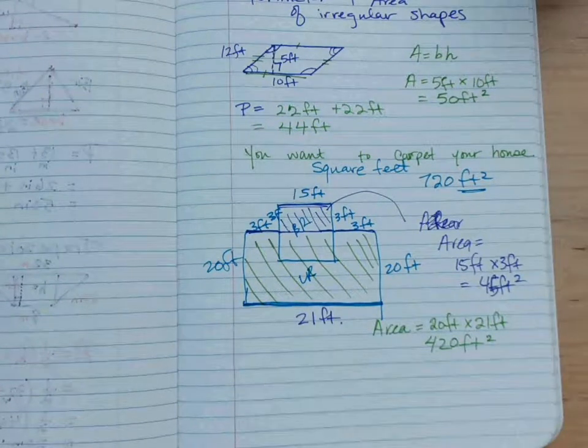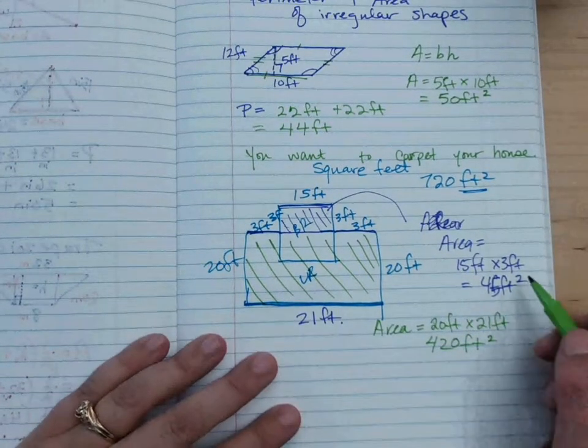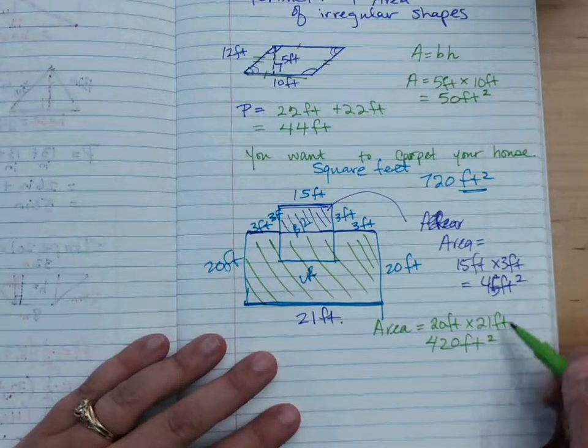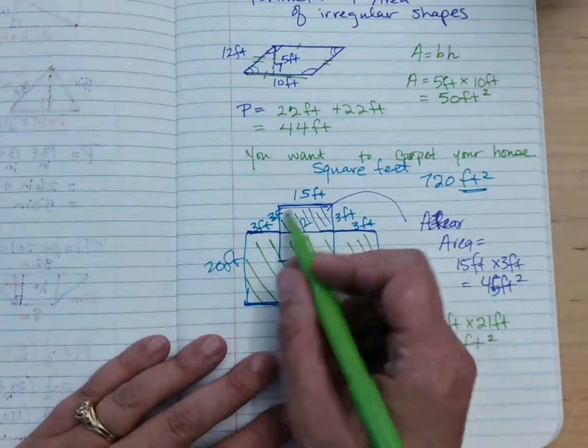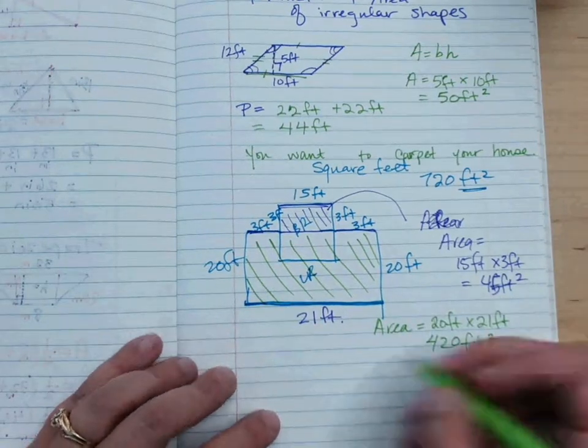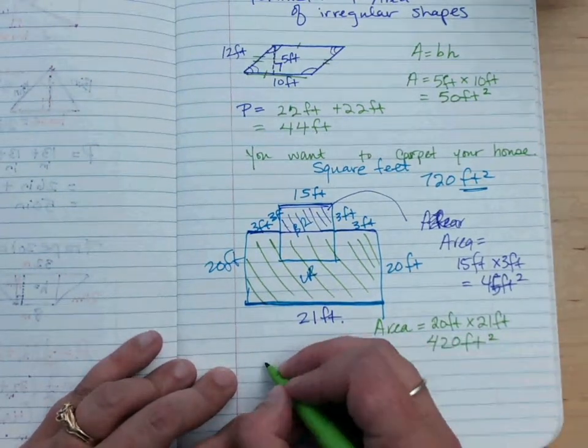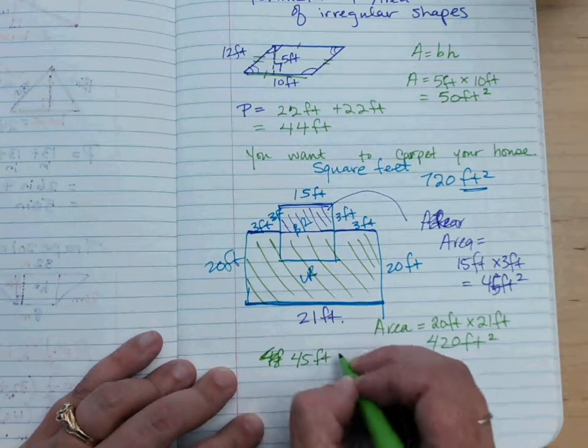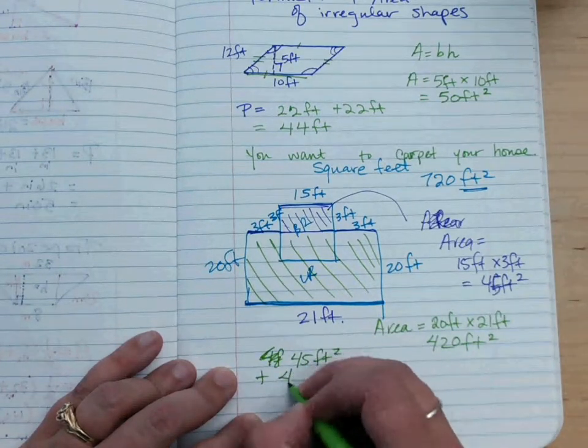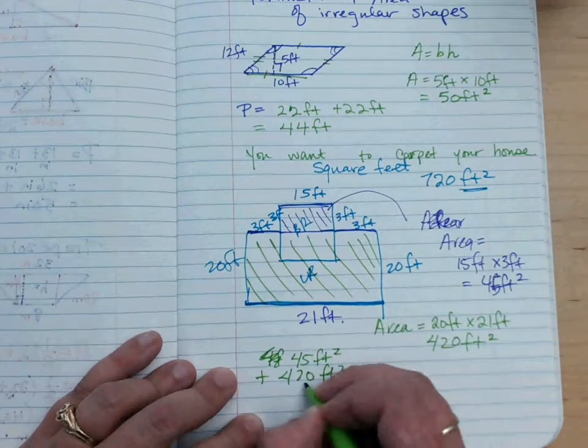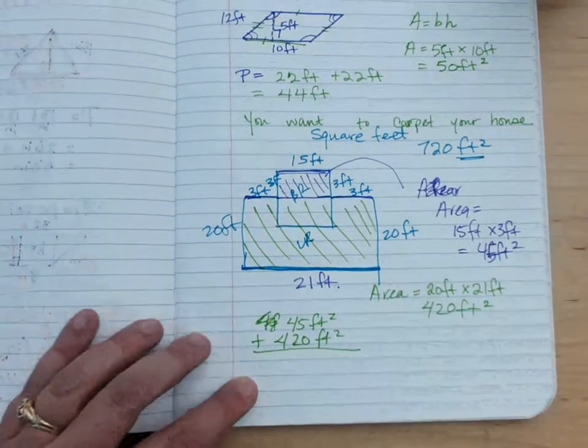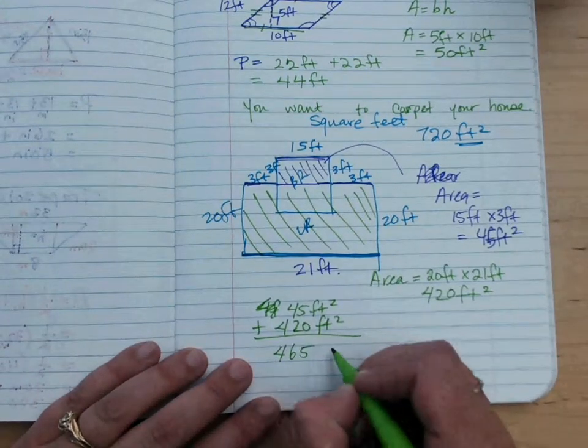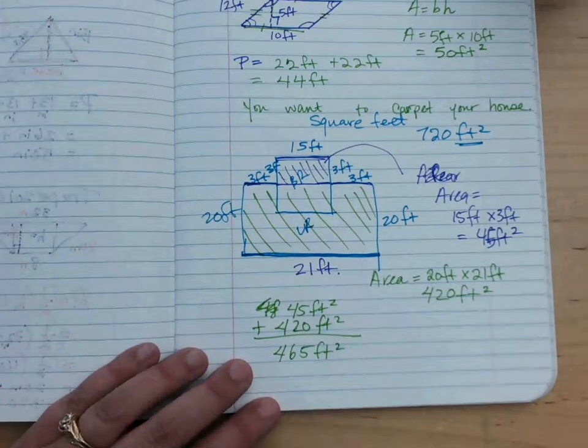What's the area that I have total? My total area, I would want to do what? Add, yeah, add them together, the area of part of the bedroom and the area of part of the living room. So the areas together are going to be 45 feet squared plus the 420 feet squared. And what do I get for a total area? 465 feet squared.